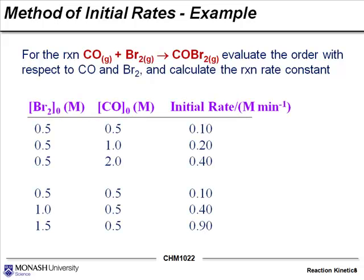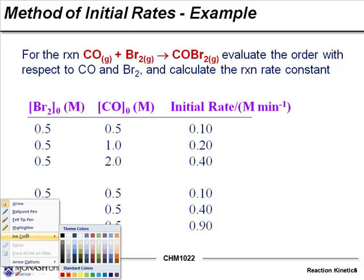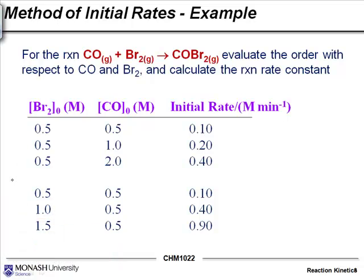If we're going to use the method of initial rates, we perform the same reaction a number of times and vary the concentration. For a reaction with more than one reactant, you have to set this experiment up intelligently. The first thing you'll notice is for the first three times we've run this experiment, we've held the concentration of one reactant constant, and it's the second reactant carbon monoxide where we've varied it each time.